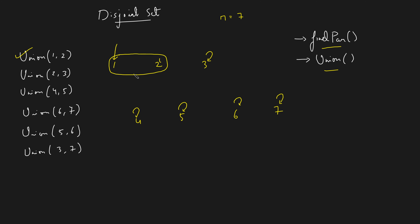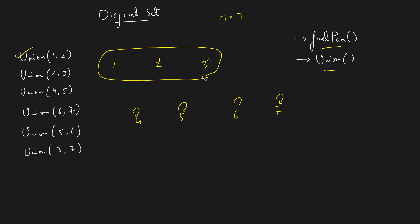Union simply combines two different components. Now union(2, 3) means the component to which 2 belongs and the component to which 3 belongs get attached. After combining both components, since we have three nodes, we can make anyone the parent — let's make 1 the parent. So union(2, 3) is done; it's very simple.